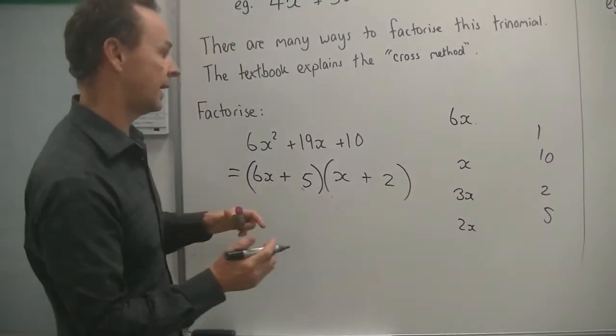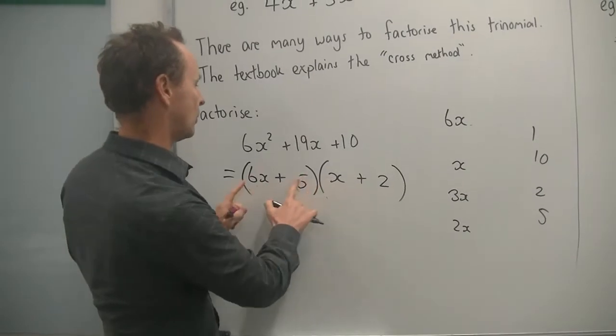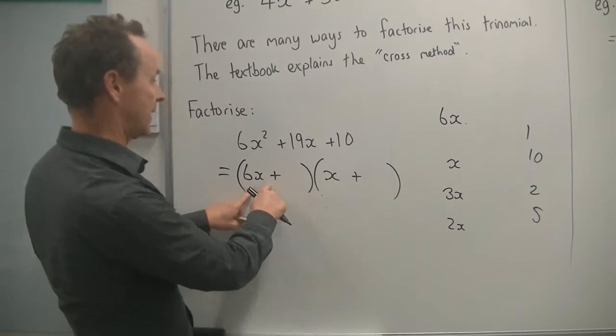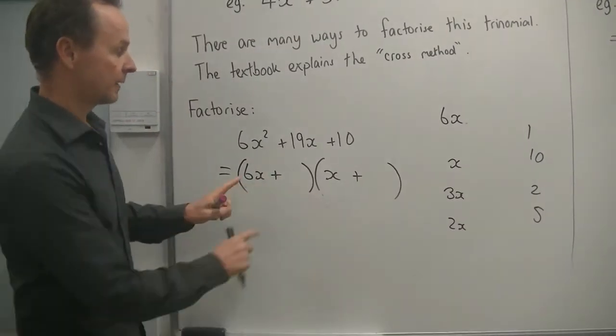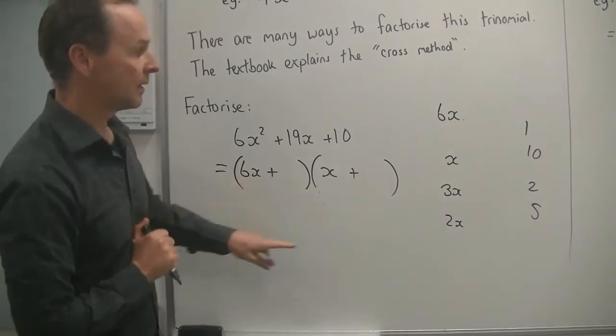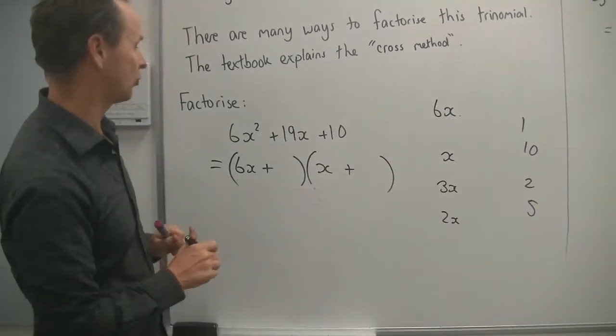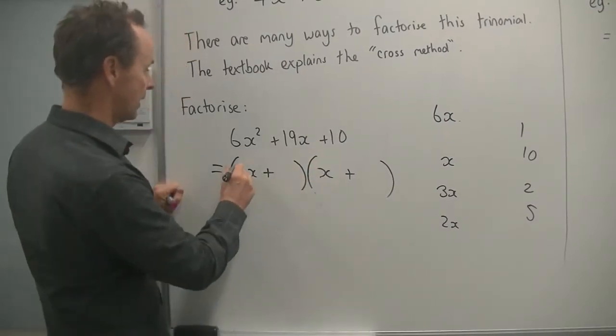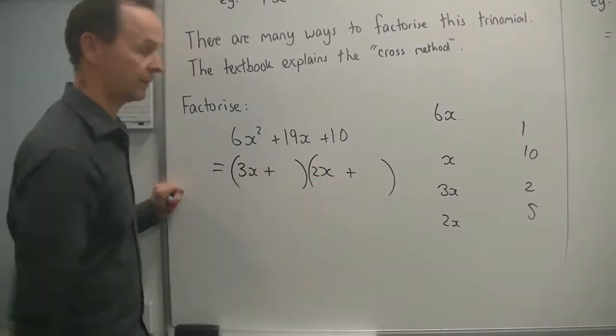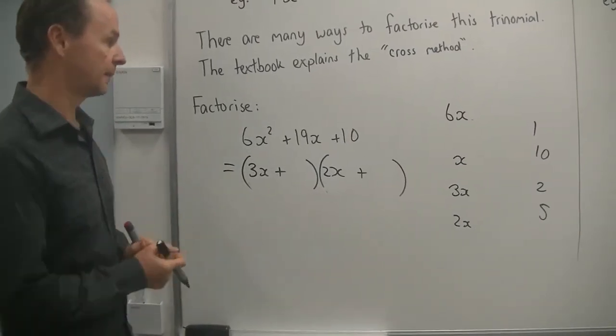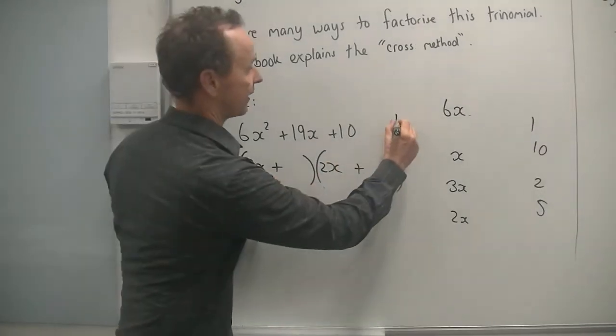And then I can try in my head 1 and 10. I don't think that's going to work because if I put a 10 there, I've got 10x and a 1 there, I've got 6x. That's 16x. If I put it the other way, 10 there, I've got 60x, which is way too much. So maybe I could try, and I just tried 2 and 5. So perhaps 6x and 1x is not the answer. Let's try 3x and 2x. Sounds complicated at the start, but once you practice a little bit, it's not too bad.